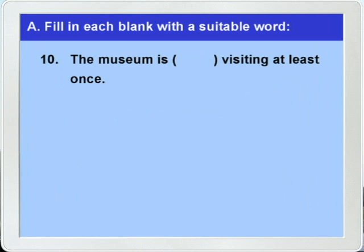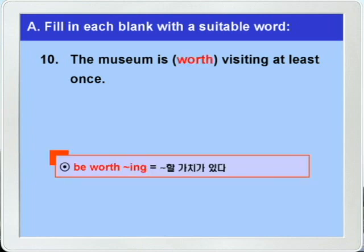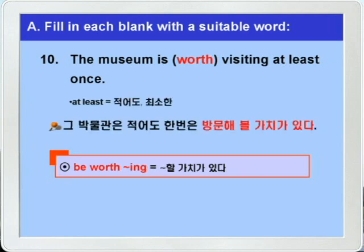10번: 'The museum is ___ visiting at least once.' 여러분 'be worth -ing' 기억나시죠? 정답은 worth를 쓰면 되겠습니다. 그래서 'be worth -ing' 하면 '뭐뭐 할 가치가 있다' 이런 뜻이죠. 'at least'는 '적어도, 최소한' 이런 뜻이니까, 'The museum is worth visiting at least once' — 그 박물관은 적어도 한 번은 방문해 볼 가치가 있다 이런 말이 되겠습니다.